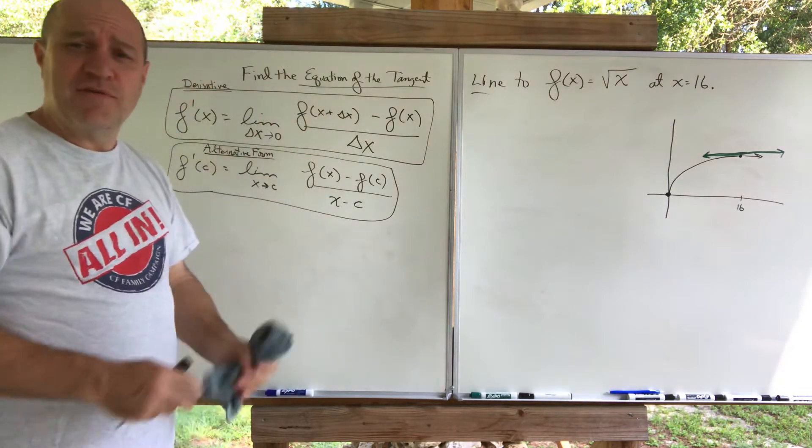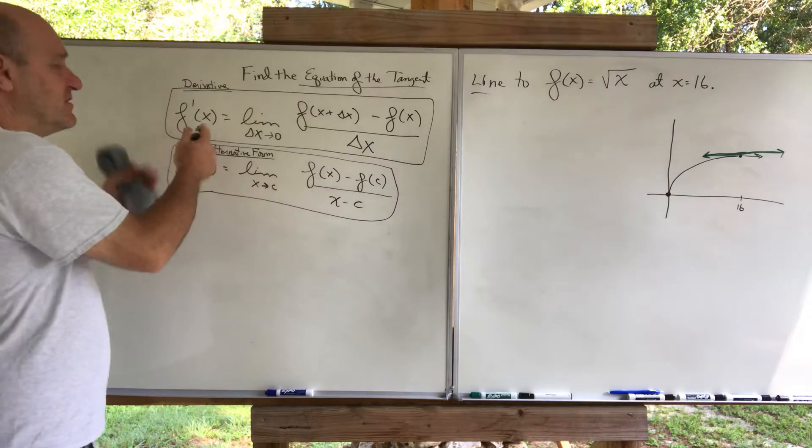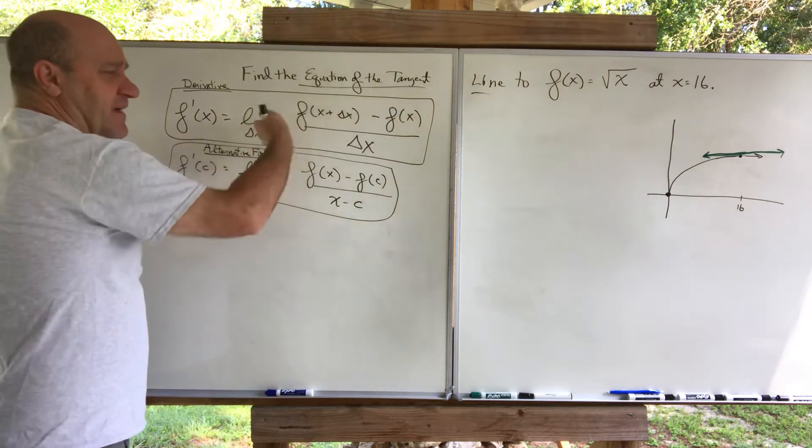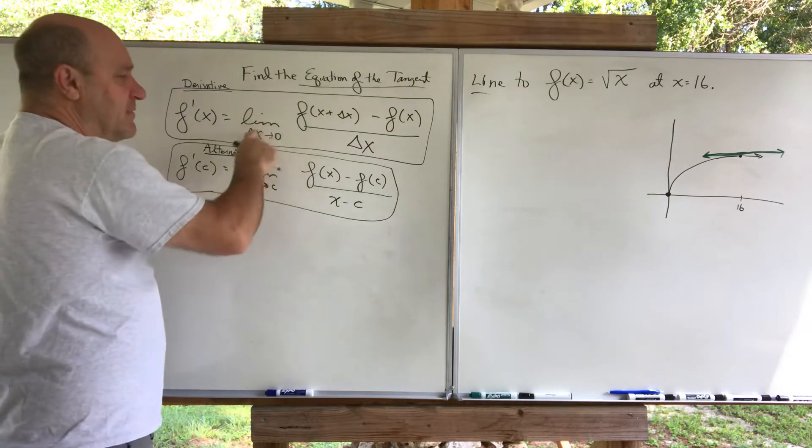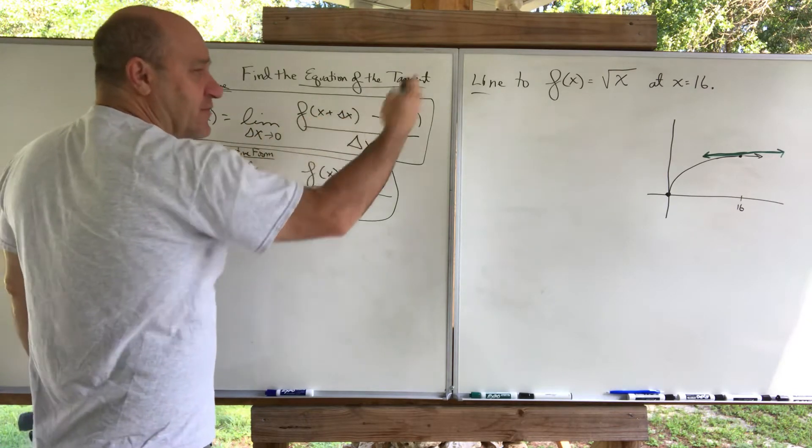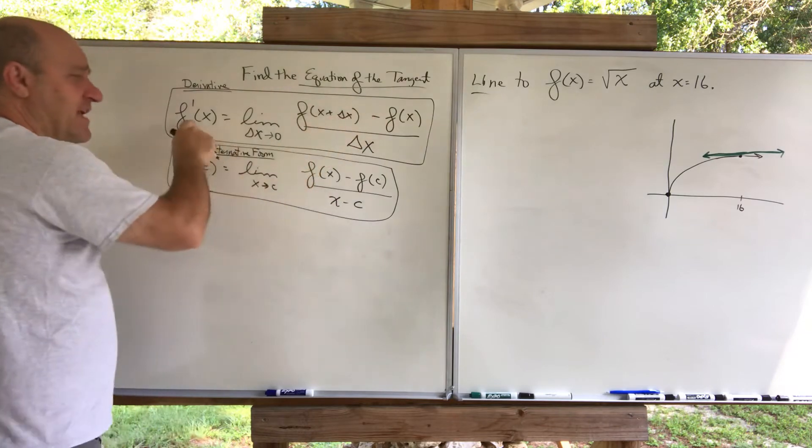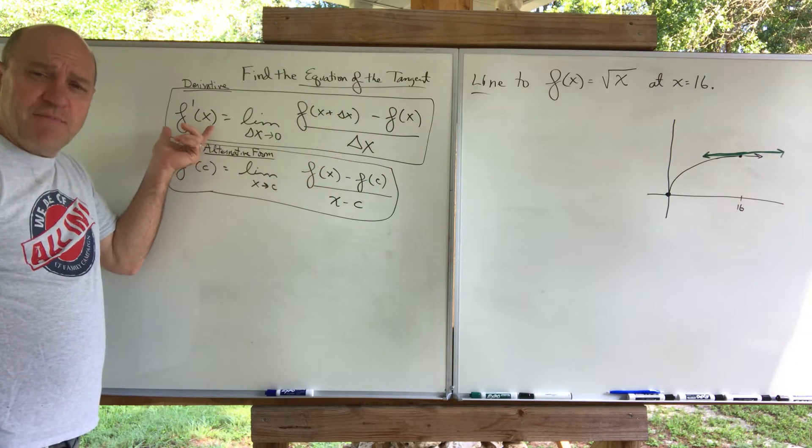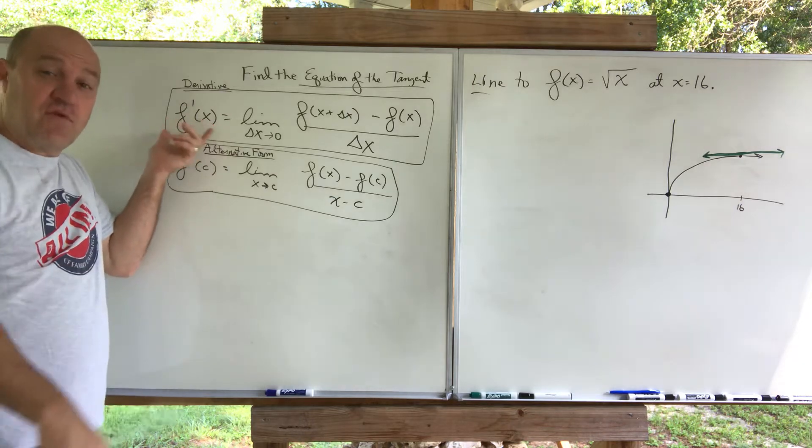So we've talked about the derivative before. The derivative is this f prime of x. And I can do this limit definition of a derivative. The limit as delta x goes to 0, and I can do that to that function and find f prime of x.